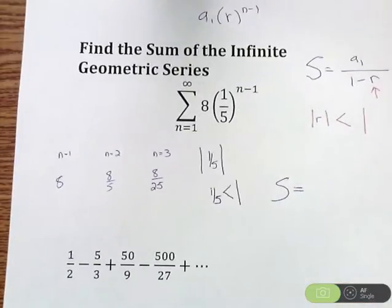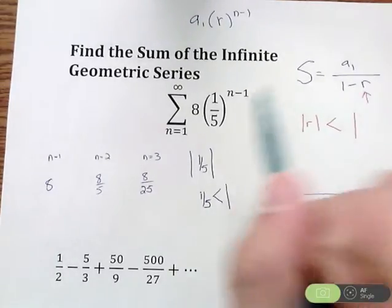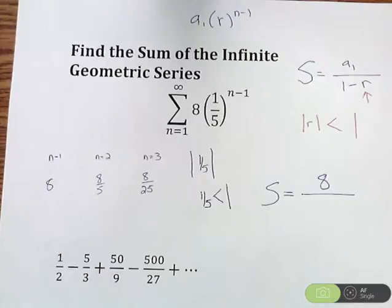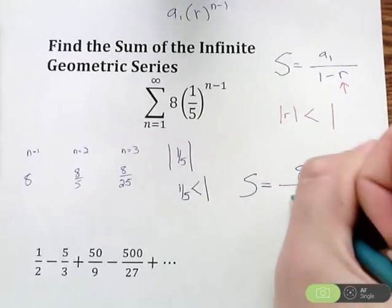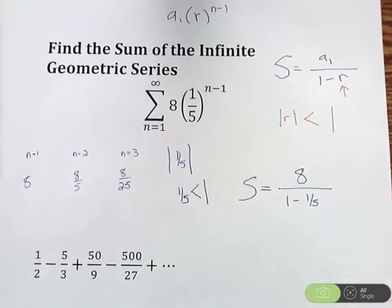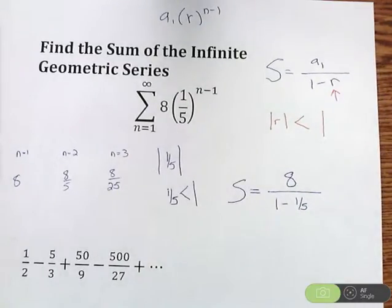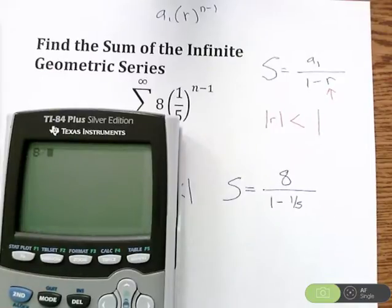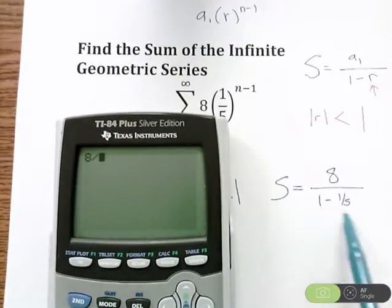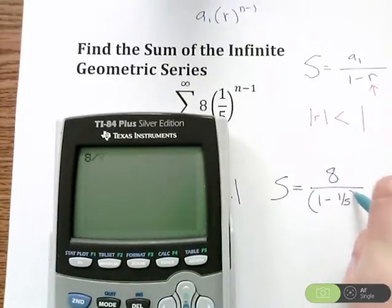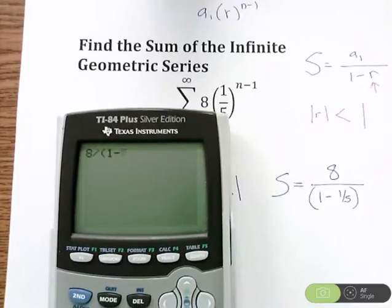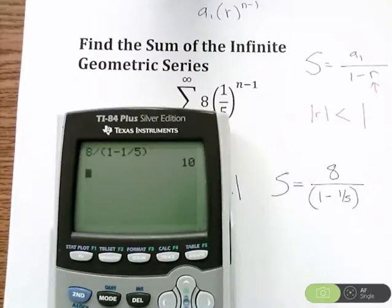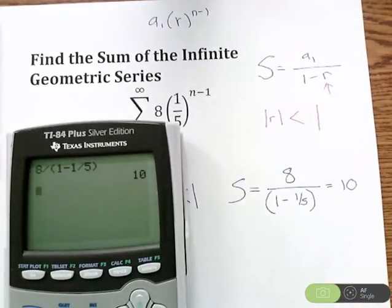We're going to have S equals, and in the numerator I need A1, which is 8. On the bottom I have 1 minus R, or 1 minus 1/5. To avoid any errors, I'm going to type this all into the calculator at the same time. I'll have 8 divided by, and then put parentheses around 1 minus 1/5. So parentheses, 1 minus 1/5, close parentheses.